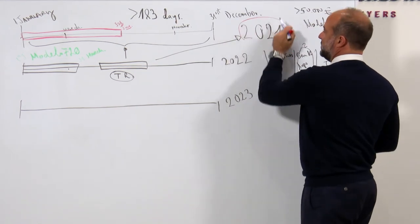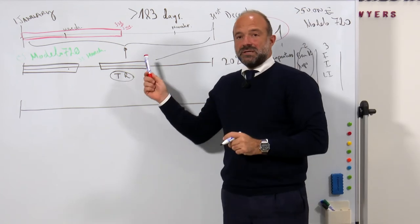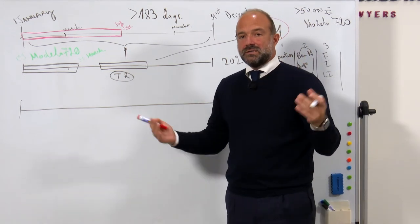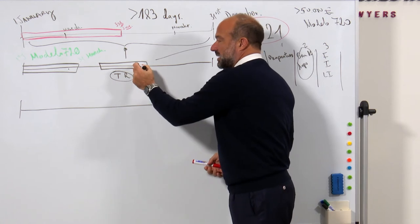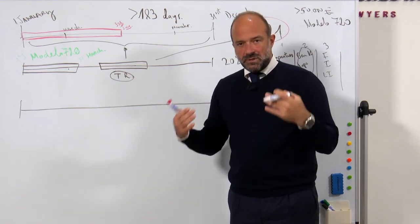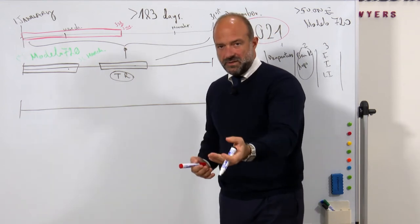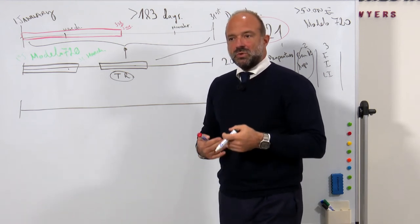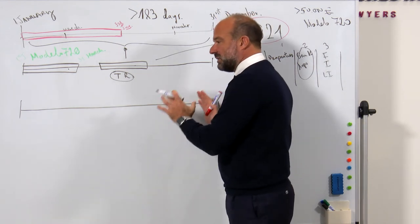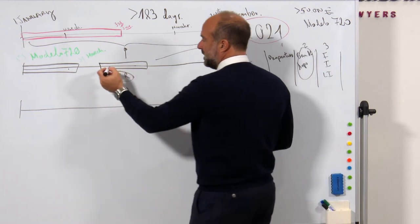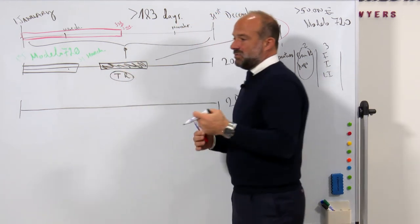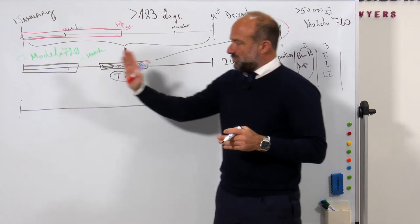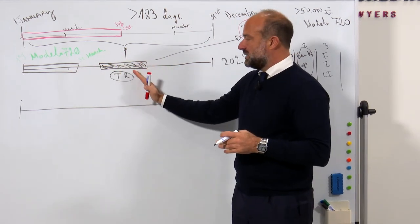In the tax return, you must declare your salary, pensions, any income, interest, dividends — anything you may have worldwide — to the tax office in Spain. This is done according to the double taxation treaties between Spain and any different country. There are many situations and specialties, but it is a worldwide declaration of your income, and the double treaty conventions must be applied — that is a must.